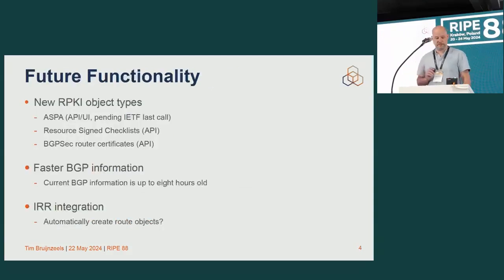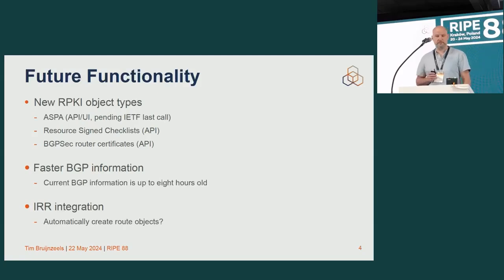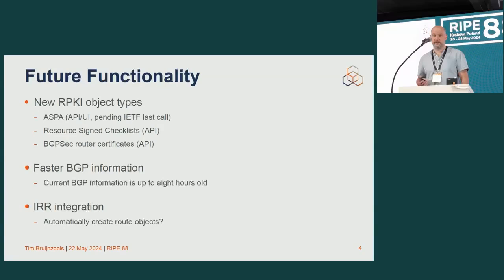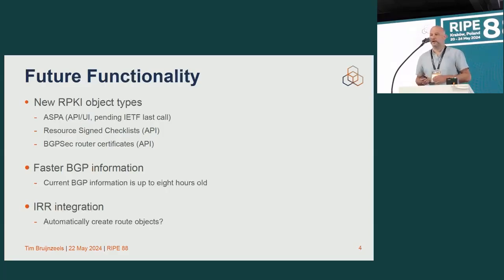Switching subjects a bit: future functionality. We want to work on new RPKI object types. In my mind, the most promising and important one would be ASPA, because I think that has a lot of potential to further secure routing. But also other things, such as resource science checklists and BGP SEC router certificates.